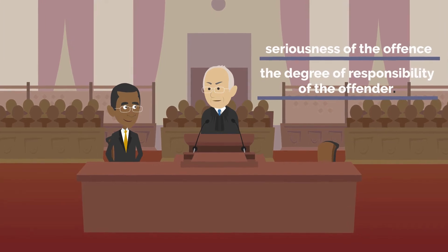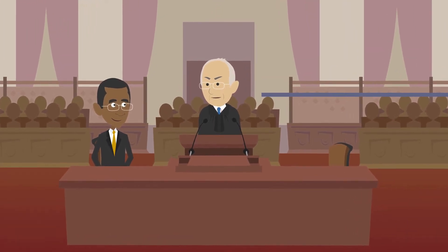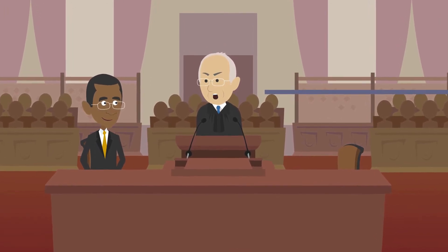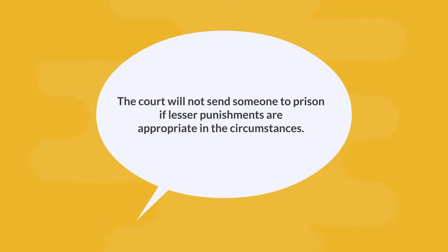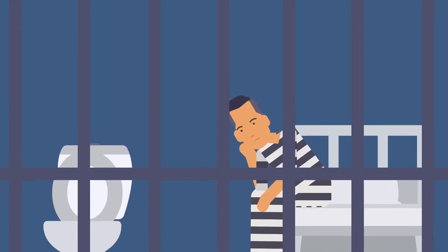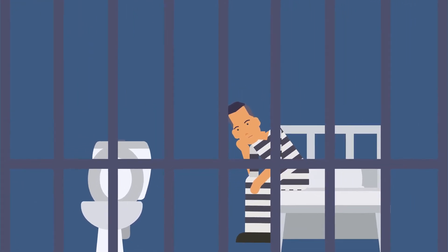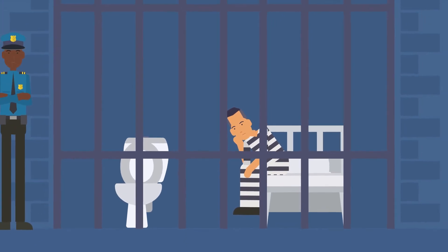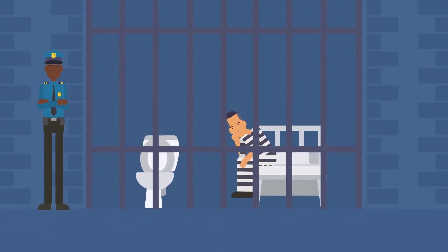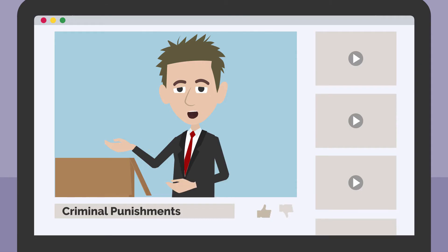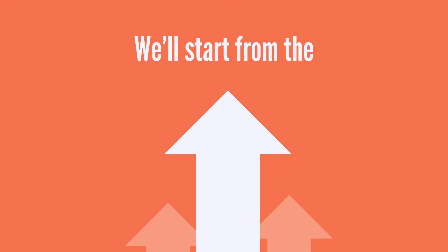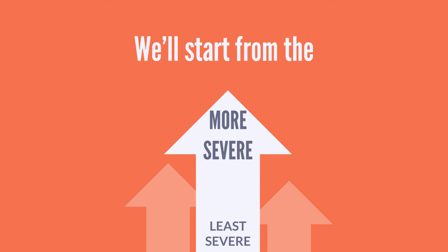The court will consider, in addition to mitigating and aggravating factors, how similar crimes have been punished in the past, as well as any other special considerations. The court will not send someone to prison if lesser punishments are appropriate. Moreover, when more than one jail term is imposed for separate crimes to be served consecutively, the court is required by law to consider if the total time in jail would be unduly long or harsh. In this video, we will explain the types of criminal punishments used in Ontario, starting from the least severe and gradually explaining more severe degrees.